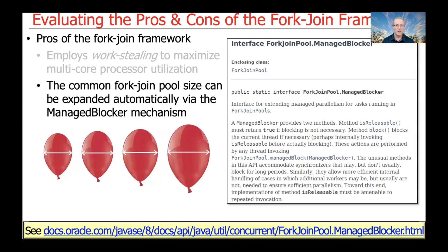Another benefit is the common fork-join pool, which is effectively a singleton that enables utilization of all different cores to be managed through one set of queues. The common fork-join pool can be expanded automatically — the number of worker threads in the pool can be expanded using the managed blocker mechanism. We'll talk about managed blockers later when we cover the fork-join pool in more detail. These are some of the powerful features of this object-oriented data parallelism technique in Java.